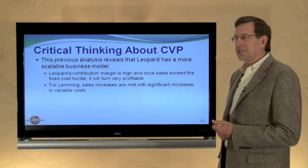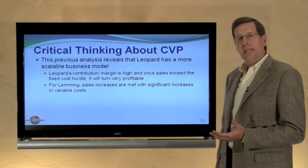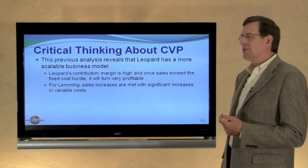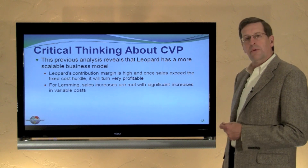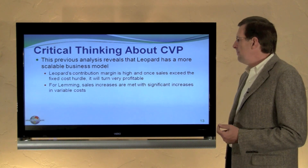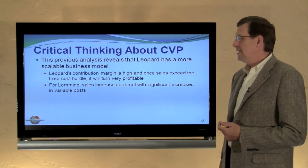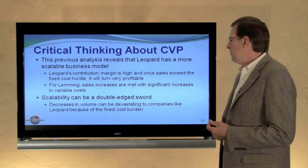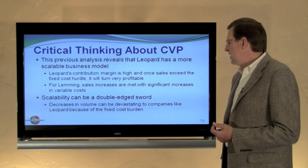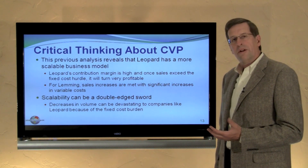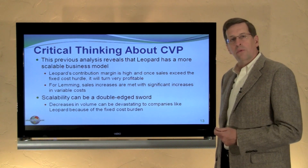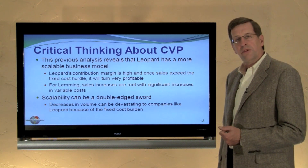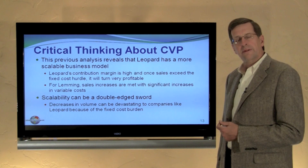What the previous analysis reveals is that Leopard has a more scalable business. Leopard's contribution margin is high, and once sales exceed their fixed cost hurdle, it will turn very profitable. For Lemming, sales increases are met with significant increases in variable costs. However, be aware that scalability can be a double-edged sword. If we had a decrease in volume, the effect would be far more devastating to Leopard than to Lemming, because Leopard continues to be burdened with the fixed costs it will incur no matter its volume of sales.